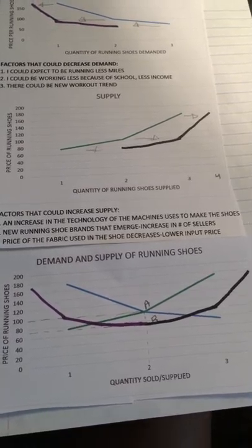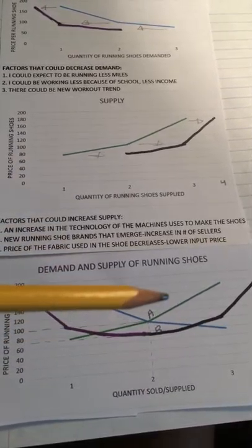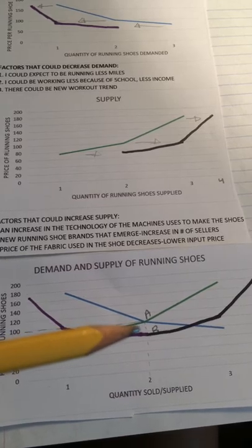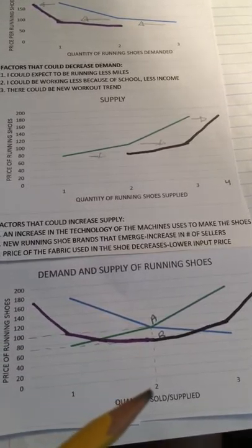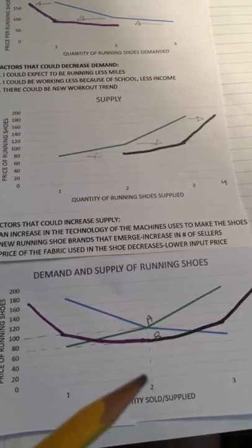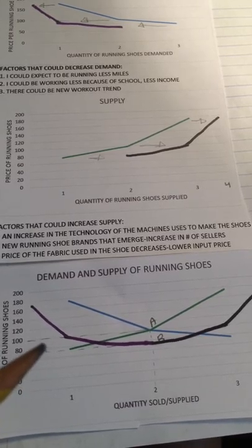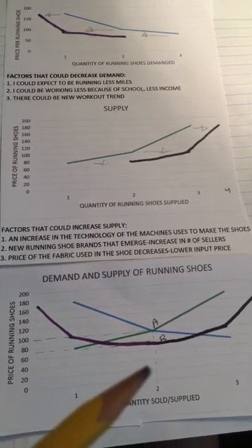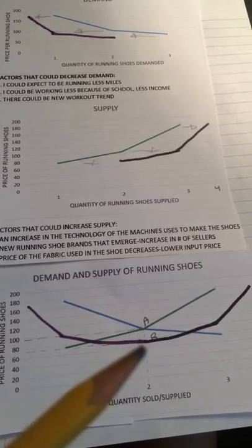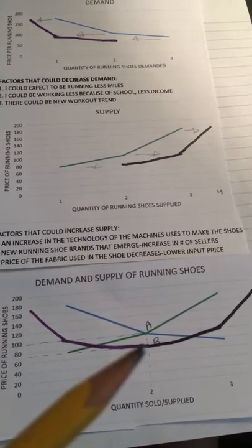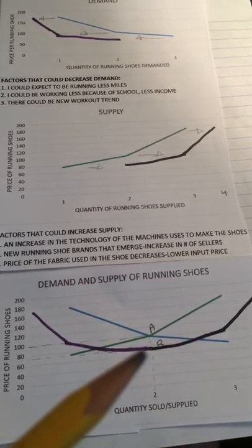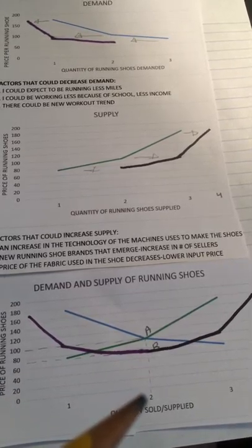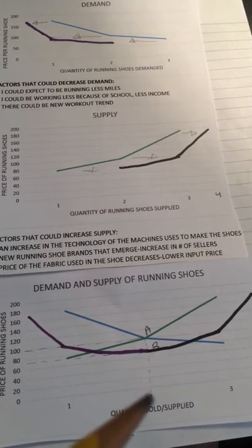Now we'll look at how the demand and supply curves interact. The blue and green lines show our original demand and supply curves, and the original equilibrium is at point A — at a quantity of 2 and a price of $100. With the shift of the decrease in demand and the increase in supply, the equilibrium moves from point A to point B. The new equilibrium is now at a price of $75 and a quantity of 2 demanded and 2 supplied.